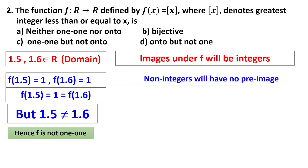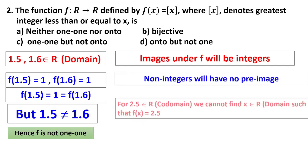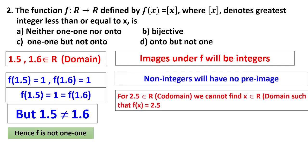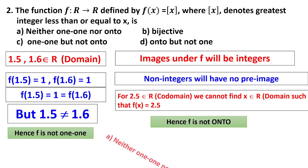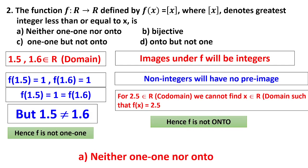The speciality of the greatest integer function is that its images are all integers. For non-integers on the right-hand side, there will be no pre-image. For example, if you take 2.5 in the codomain, it has no pre-image in the domain. Therefore it is not onto. Hence the answer is A: neither one-one nor onto.